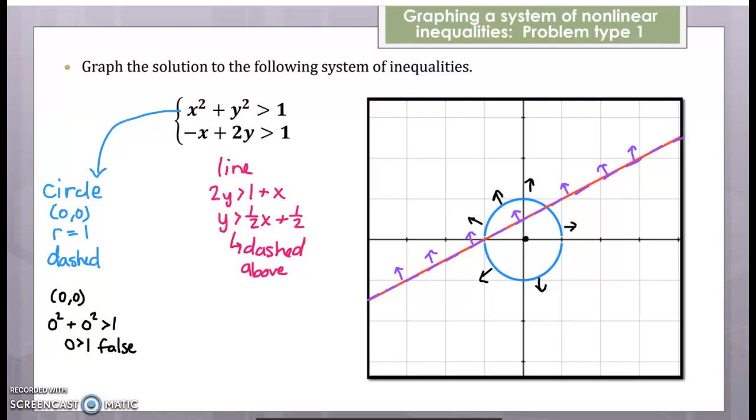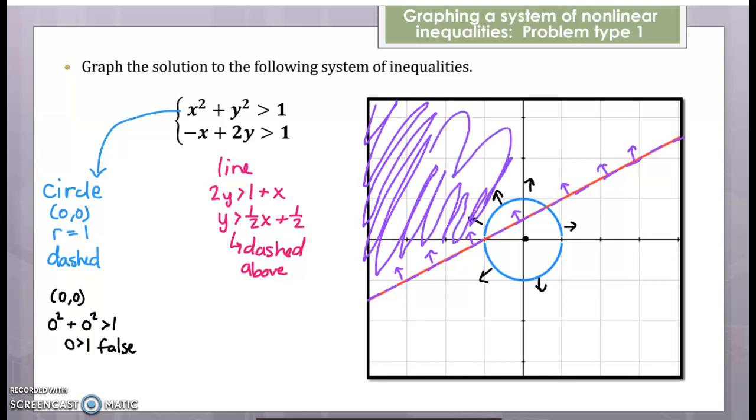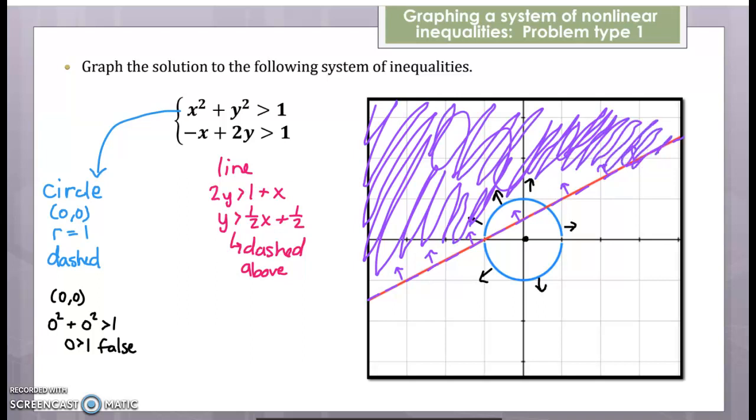So where are we both outside the circle and above the red line? That's going to be here. And I'm not quite done yet because this blue line was supposed to be dashed. So the circle needs to be a dashed line instead like so. So there's one example of graphing nonlinear inequalities.